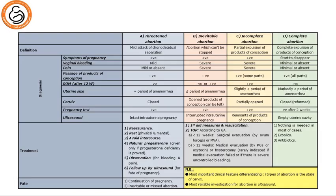This table demonstrates the differences between different types of miscarriage, starting from threatened abortion, then inevitable, incomplete, and complete. Notice that in the fate of threatened abortion, sometimes cases continue the pregnancy and sometimes it changes into inevitable or missed abortion. Usually the first thing in diagnosis is to differentiate whether the cervix is open or not, and the degree of pain and bleeding — this will categorize the case into one of these types.